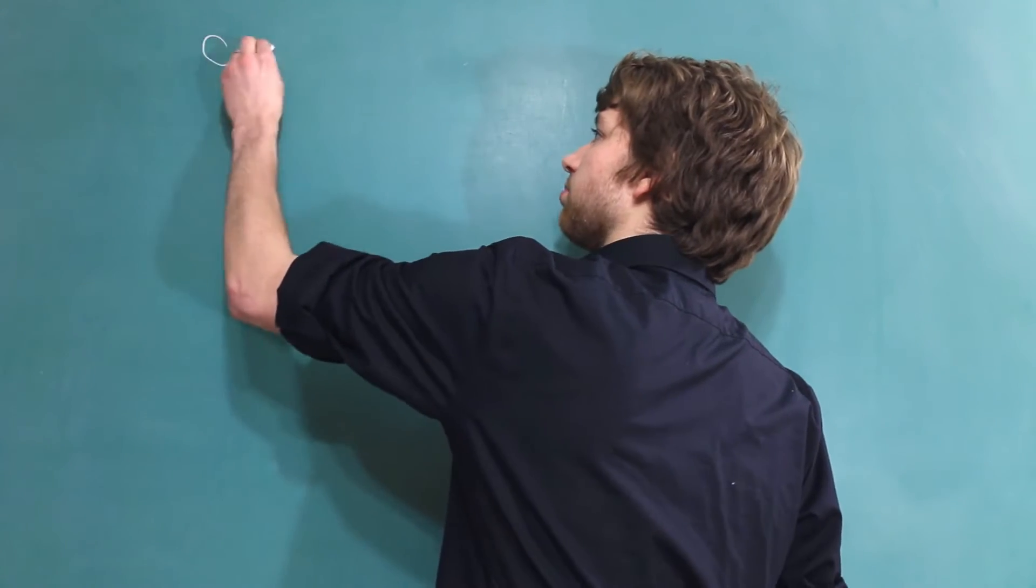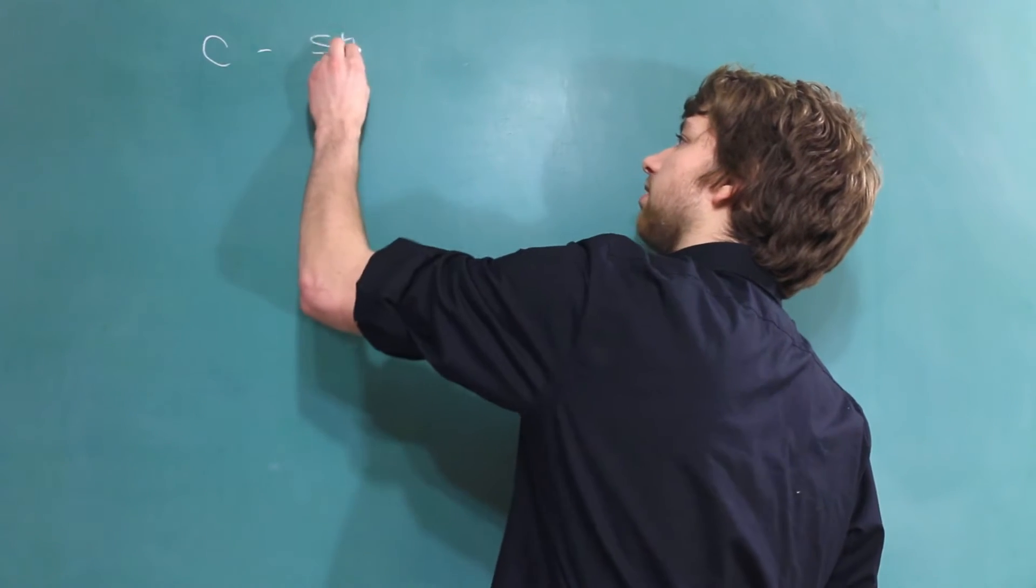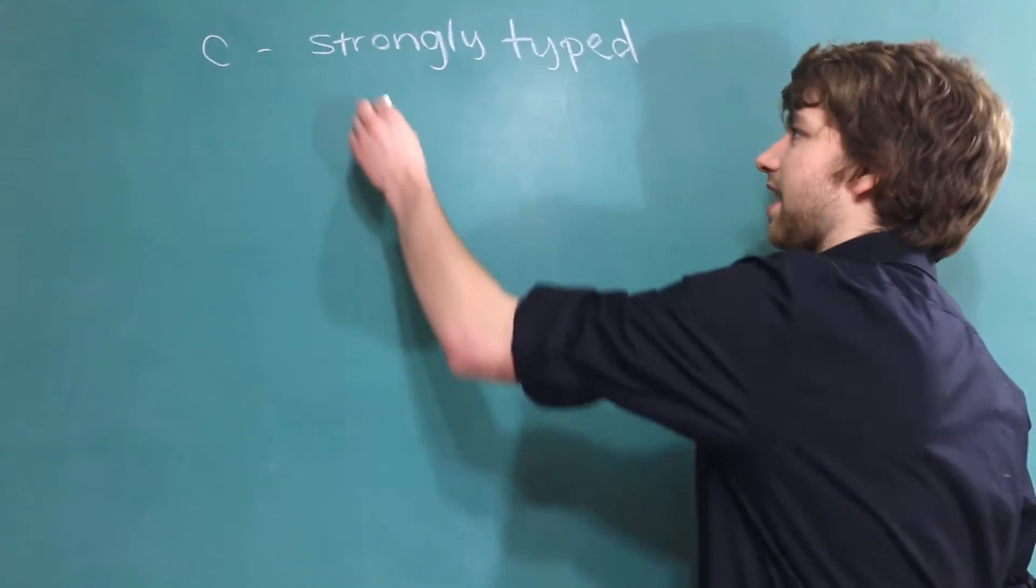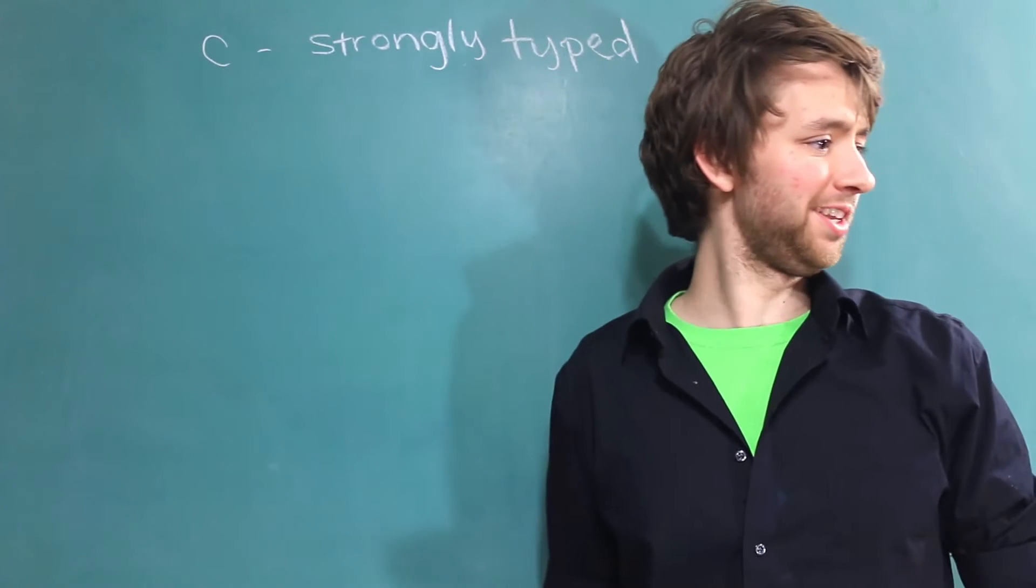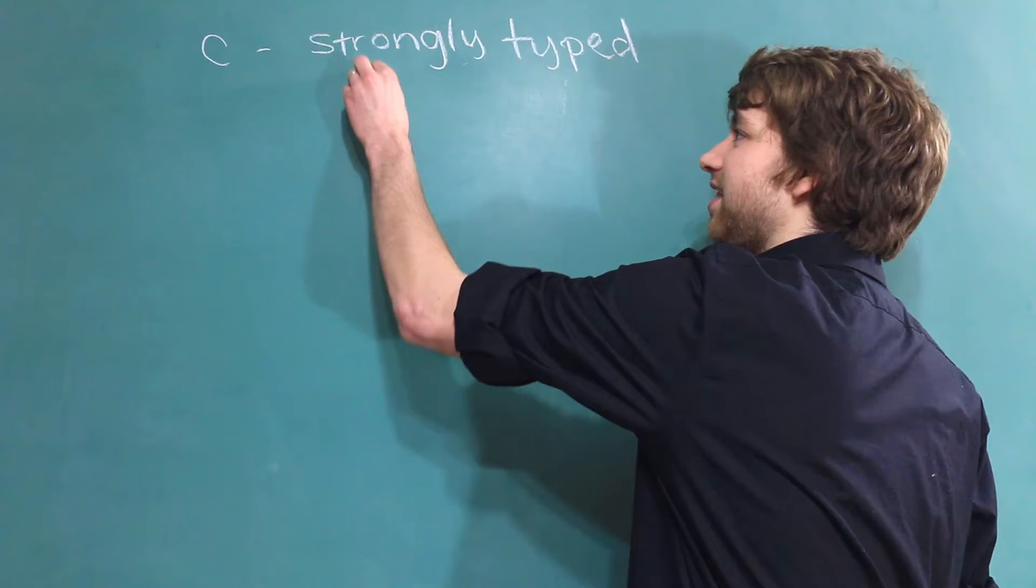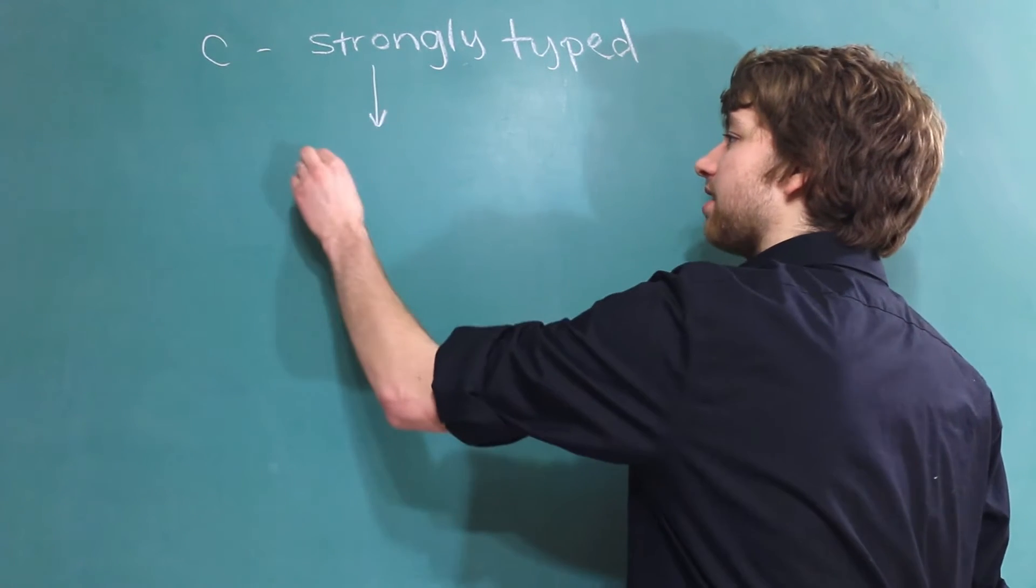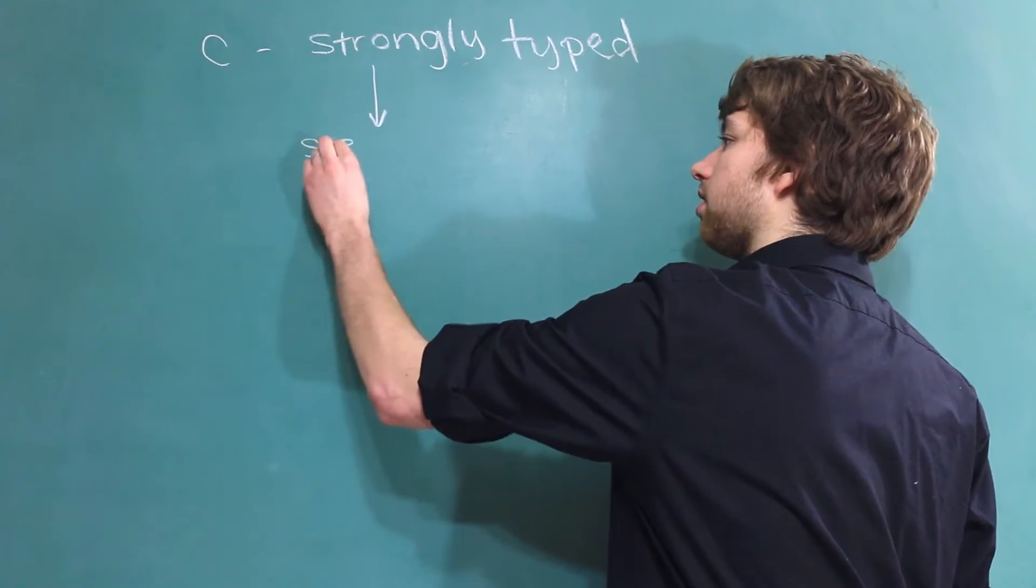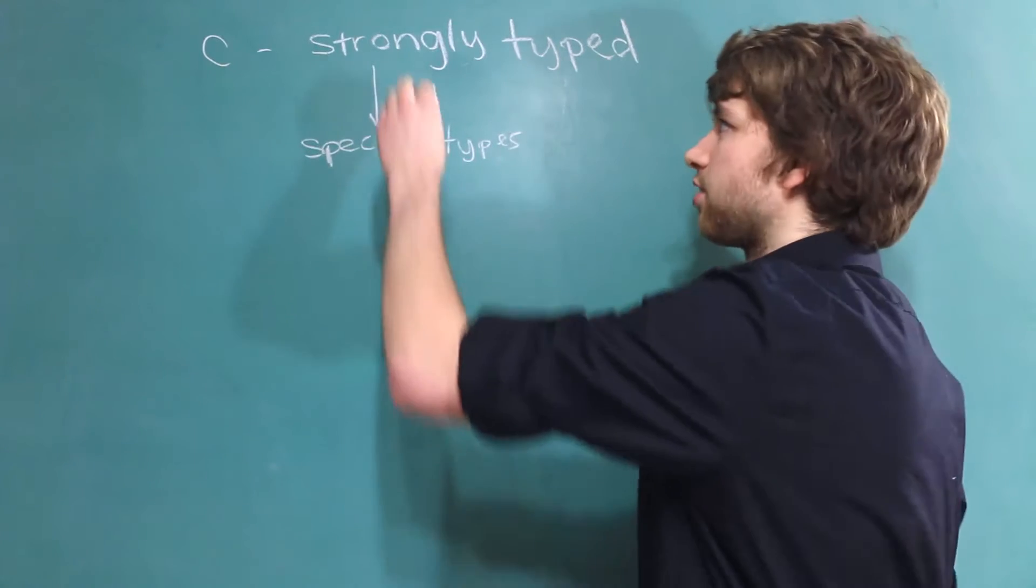So C is what's known as a strongly typed language. What strongly typed means is that every piece of data has a specific type. You can think of strongly as strict.